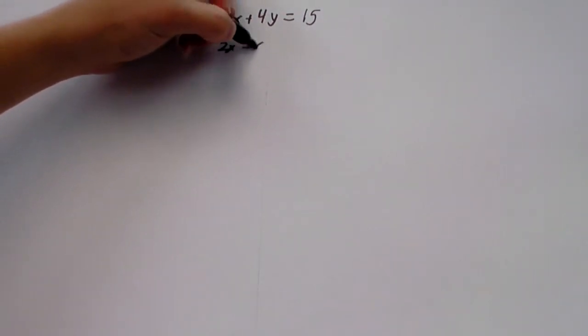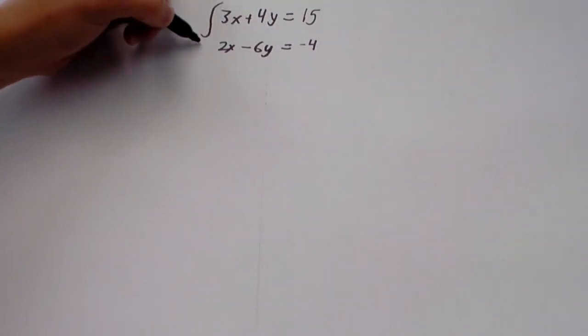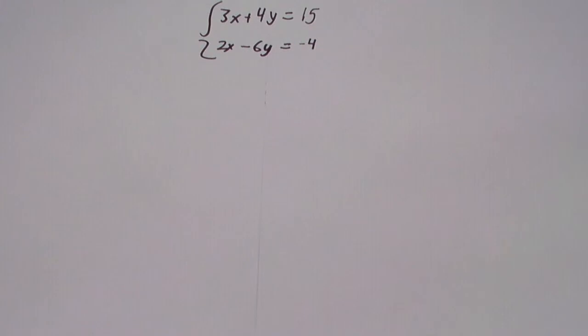3x plus 4y equals 15, and 2x minus 6y equals negative 4. Alright, so we're going to have a system of equations where both of these have to be true.